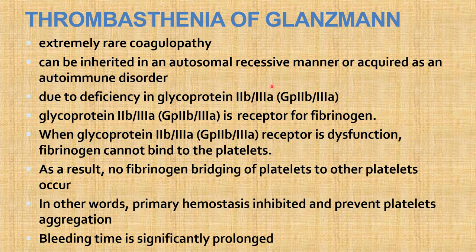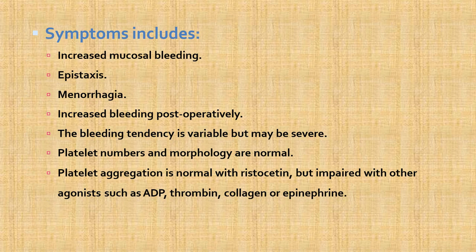Glanzmann's thrombasthenia is a rare coagulopathy, inherited as autosomal recessive or acquired as autoimmune disorder. It is due to deficiency of the GP2b3a complex, the receptor for fibrinogen. When this receptor is dysfunctional, fibrinogen cannot bind to platelets, so no fibrinogen bridging of platelets occurs. Primary hemostasis is inhibited, platelet aggregation is prevented, and bleeding time is significantly prolonged. Symptoms include increased mucosal bleeding, epistaxis, menorrhagia, and increased postoperative bleeding. Platelet numbers and morphology are normal; aggregation is normal with ristocetin but impaired with other agonists such as ADP, thrombin, collagen, or epinephrine.